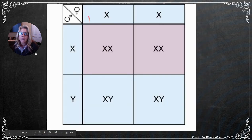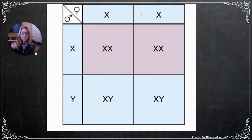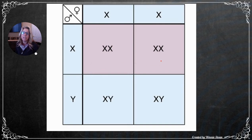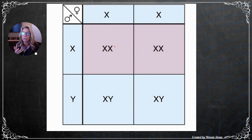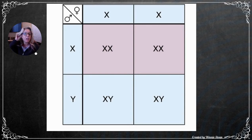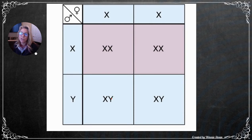In a Punnett square for sex determination: females contribute X and X, males contribute X and Y — giving a 50/50 chance of a girl or boy. Females have two versions of the X. For sex-linked traits, you place the trait on the X chromosome. Y-chromosome-specific traits are called holandric traits — for example, a hairy pinna, which is only passed on via the Y chromosome.